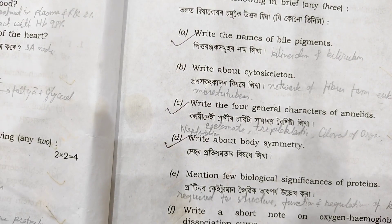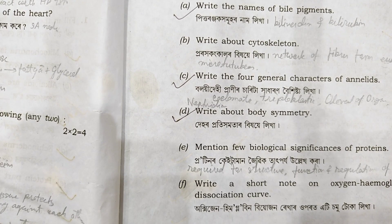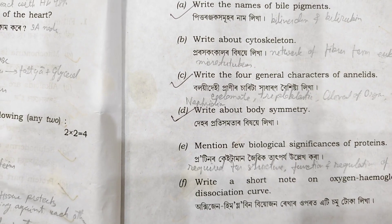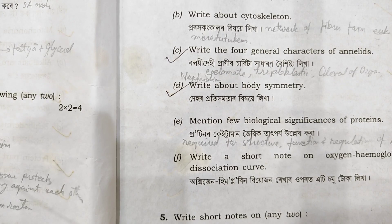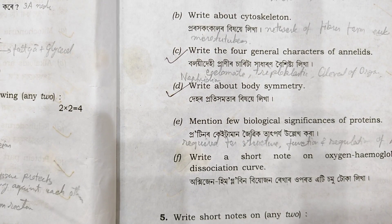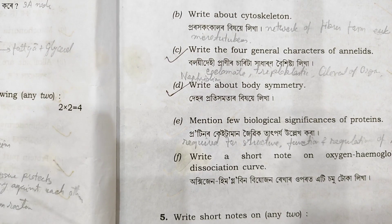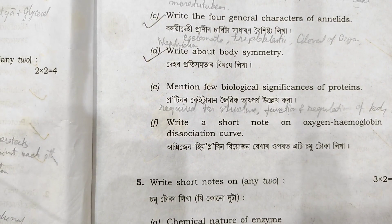Next: write the four general characters of annelids. Annelids have a true coelom and are triploblastic — meaning three germ layers are present: ectoderm, endoderm, and mesoderm. Body symmetry: organisms can be divided by a single plane.